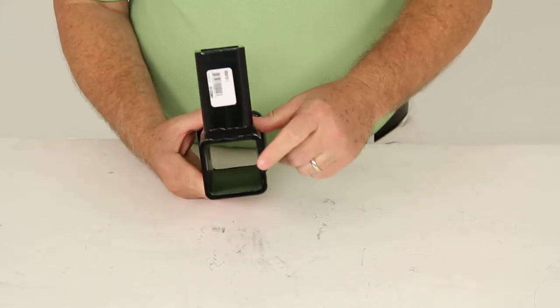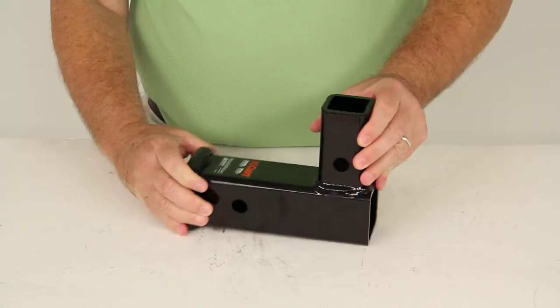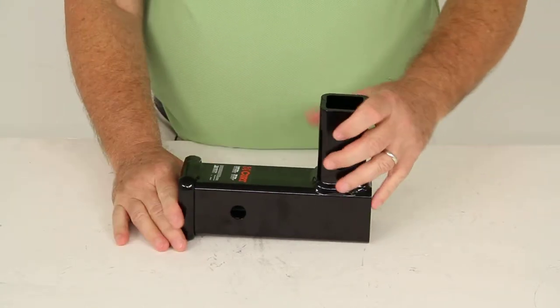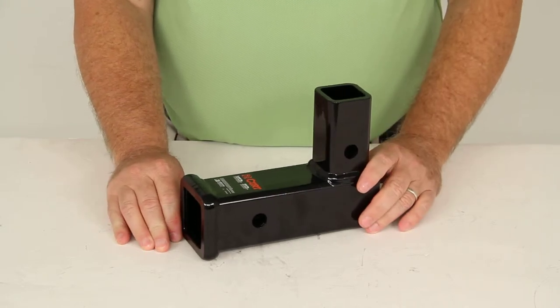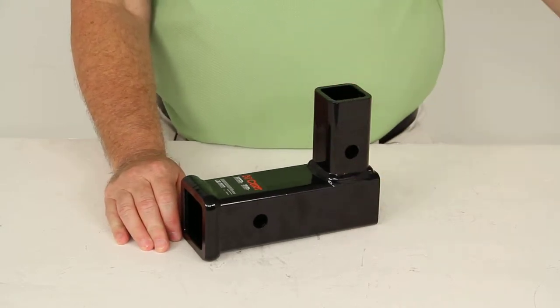As you can see, the rear of this horizontal tube is open. The weight rating on this is 5,000 pounds gross towing weight capacity and 500 pounds tongue weight capacity.